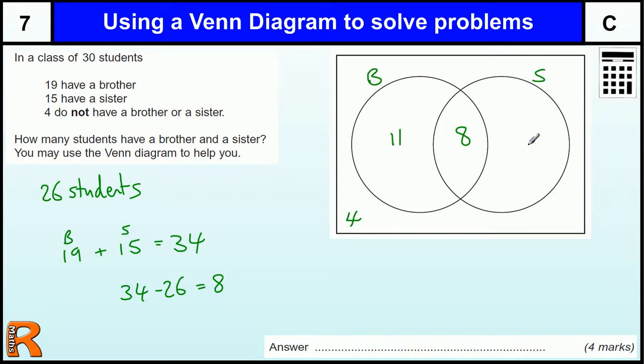Then we've got 11 here and 7 here to make up our 19 on this side and 15 on that side. So how many students have a brother and a sister? That's the ones in the middle. That's eight for four marks.